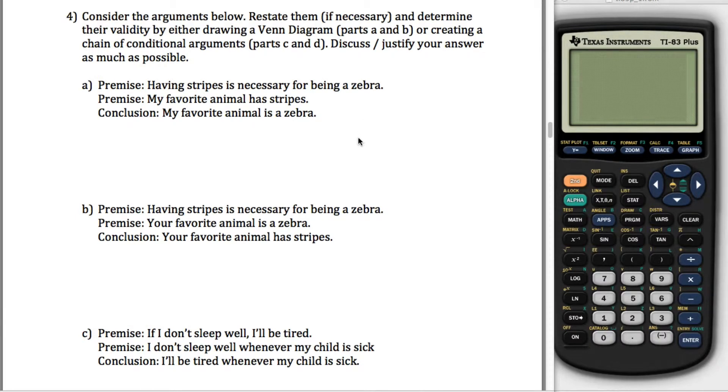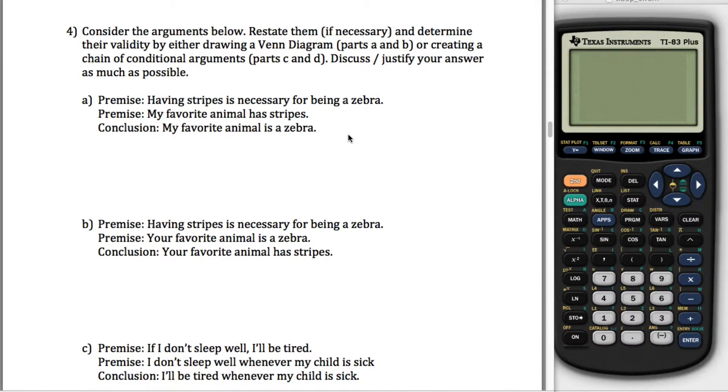All right, question four from the midterm. Consider the arguments below, restate them if necessary, and determine their validity. And how are you going to determine their validity? Well, either by drawing a Venn diagram in these first two, or creating a chain of conditional arguments in the next two. And discuss or justify your answer as much as possible.